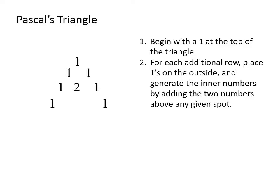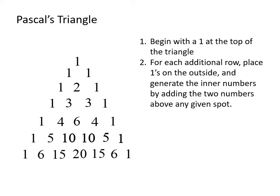For the next row, again 1s on the outside. 1 plus 2 gives us 3, and 2 plus 1 gives us 3. Continuing to the next row, we have 1s on the outside. 1 plus 3 gives us 4; 3 plus 3 gives us 6; 3 plus 1 gives us 4. And we can continue to do this until we generate enough rows to satisfy the problem we're trying to work with.